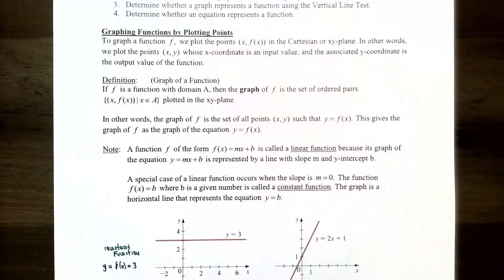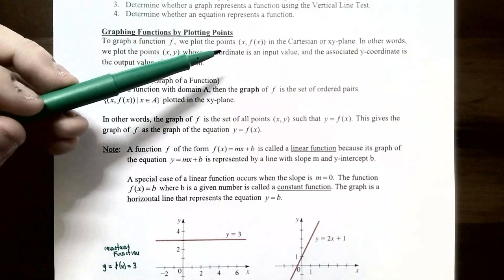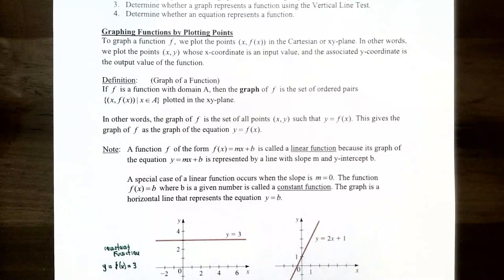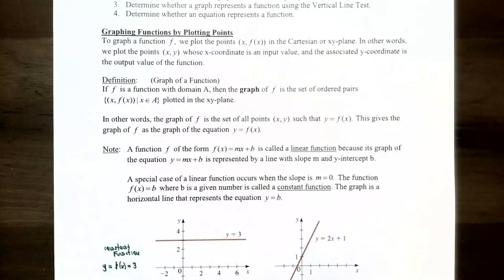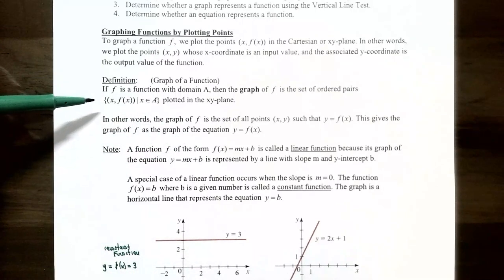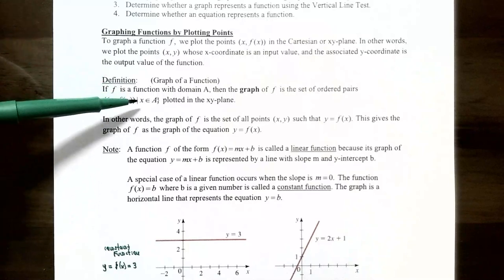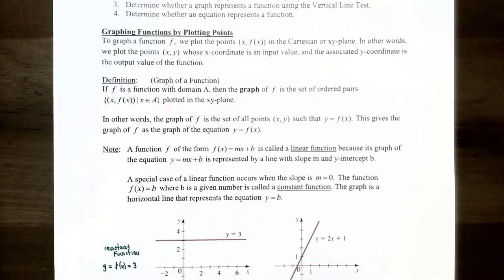Let's start with graphing functions by plotting points. If you want to graph a function f, we plot points of the form (x, f(x)), or ordered pairs (x, y), in the Cartesian coordinate system. The x coordinate comes from the domain — it's an input value — and the y coordinate is the output value corresponding to x. The graph of a function f with domain A is the set of all ordered pairs (x, f(x)) where x is a value from the domain.